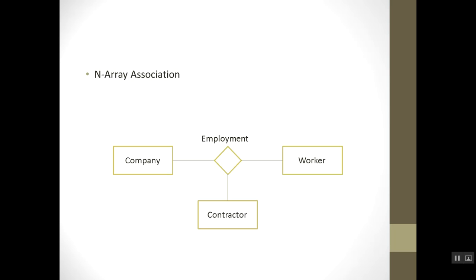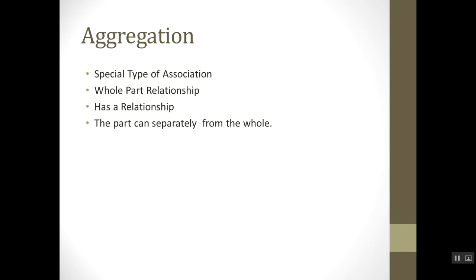Aggregation is a special type of association. In aggregation, we discuss the whole and part relationship. We will discuss whole and part in more detail, but it means that there is a 'has-a' relationship between the whole and its parts.